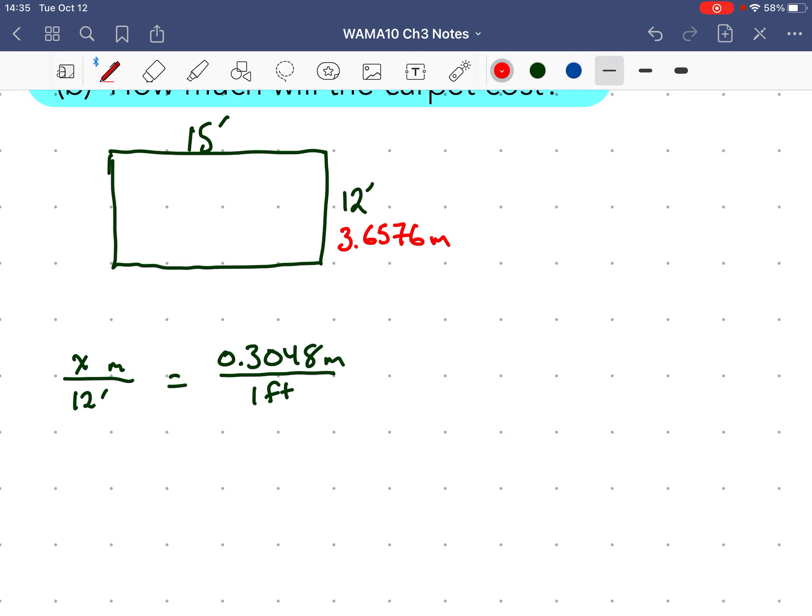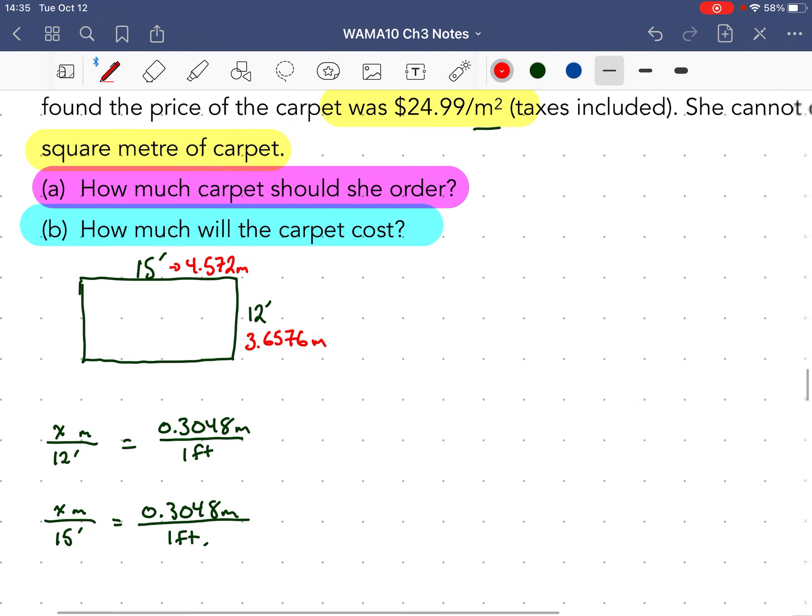So I'm going to do 15 times 0.3048 meters, that's my conversion. 15 times 0.3048 divided by 1, which just doesn't change it: 4.572. So this becomes 4.572 meters. Okay, now I know meters.